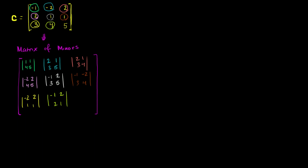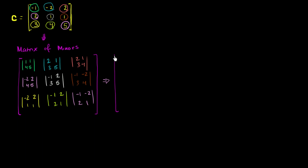And we are in the home stretch for the matrix of minors. For this last element, get rid of the last column and last row. You're left with negative 1, negative 2, 2, 1. So the determinant of negative 1, negative 2, 2, 1. From here we just evaluate each of these to get the actual matrix of minors — now with numeric values rather than 2 by 2 determinants.